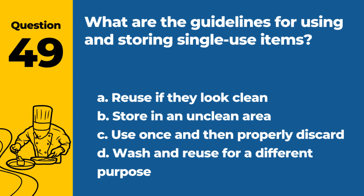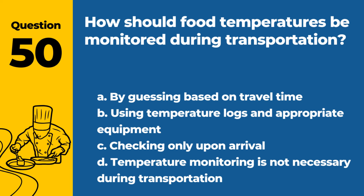Question 49. What are the guidelines for using and storing single-use items? a. Reuse if they look clean. b. Store in an unclean area. c. Use once and then properly discard. d. Wash and reuse for a different purpose. Answer: c. Use once and then properly discard. Single-use items should be used once to prevent cross-contamination.